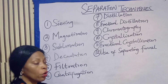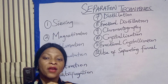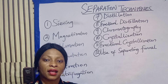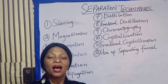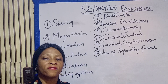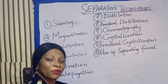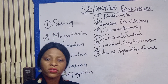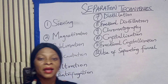The various separation techniques — number one is sieving. Sieving is used to separate substances that have various or different sizes. For example, the garri industry in West Africa is a very good example where they sieve the fine-graded particles from the coarser particles, and all these particles have different sizes.